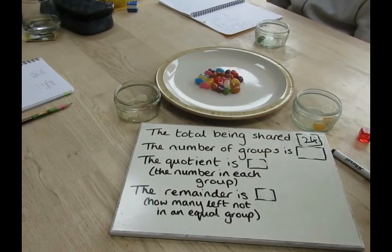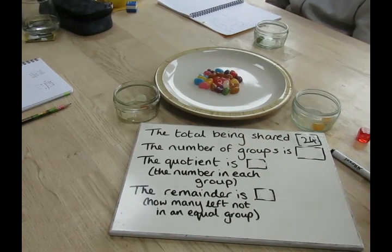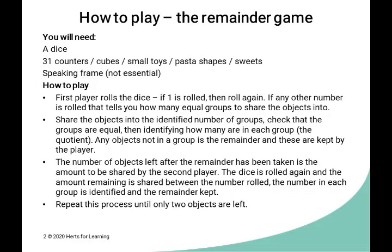The idea is you keep going, taking turns, sharing out the jelly beans until you've got only two left — and that's the end of the game. A reminder of the equipment you'll need: a dice and 31 small objects. This can be sweets like in the video, or it could be counters, cubes, small toys, pasta shapes, whatever you would like.